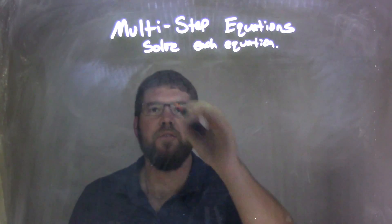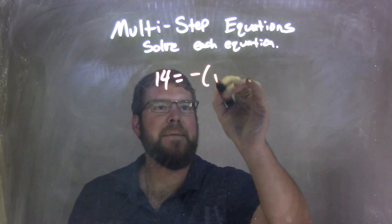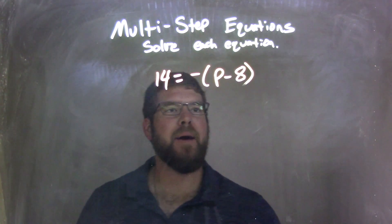So if I was given this equation: 14 equals negative parentheses p minus 8.